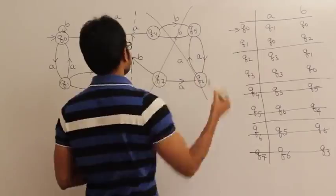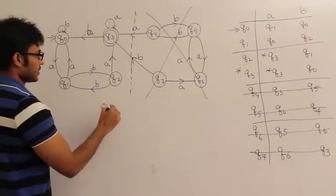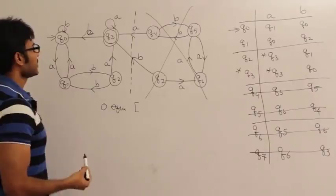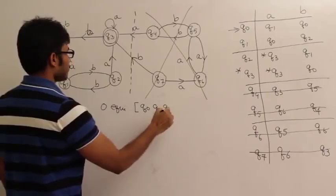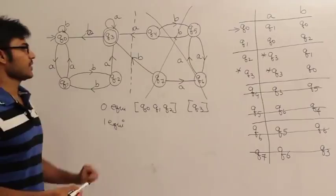What is the initial state? Q0. What is the final state? Q3. Q3 is the final state. Okay, so apply the partitioning method. First one is zero equivalence: set of non-final states and final states. What are the set of non-final states? Q0, Q1, Q2. And what is the final state? Q3. Okay, one equivalent now.